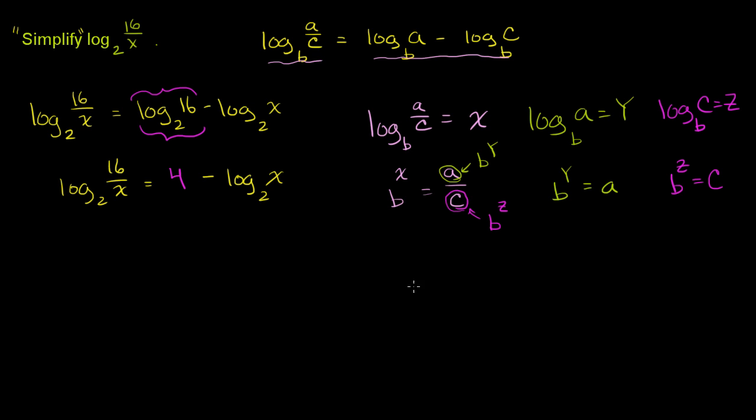we can rewrite this expression as b to the x-th power is equal to b to the y over b to the z, over b to the z. And we know from our exponent properties that this thing right over here is the same thing as b to the y minus z power. Now, this is interesting. We've just written that b to the x-th power, using exponent properties, is the same thing as b to the y minus z. So that tells us that x must be equal to y minus z.